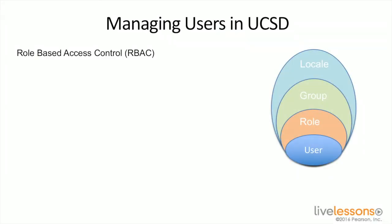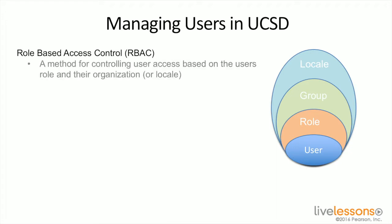When we're managing users within UCS Director, you leverage a capability called role-based access control. Role-based access control is a method for controlling user access based on the user's role and their organization or locale. Instead of providing different privileges directly to the user, you do it by the role. The role is what defines how the user can get access to different resources.